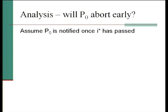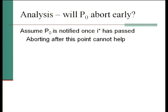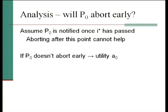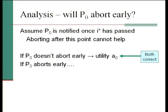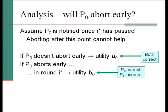We want to show there's no incentive to abort early. We can assume that p0 is notified once I* has passed — this is only additional information, it can only help p0. After I* has passed, aborting can't do anything beneficial: everyone's getting the right answer regardless. If p0 doesn't abort at all and follows the protocol honestly, both players get the right answer — that's utility A0. If p0 aborts early, we have two cases: if it's in round I*, we upper-bound their utility with B0 — that's the best utility possible for p0, assuming they get the right answer and the other player gets the incorrect answer.